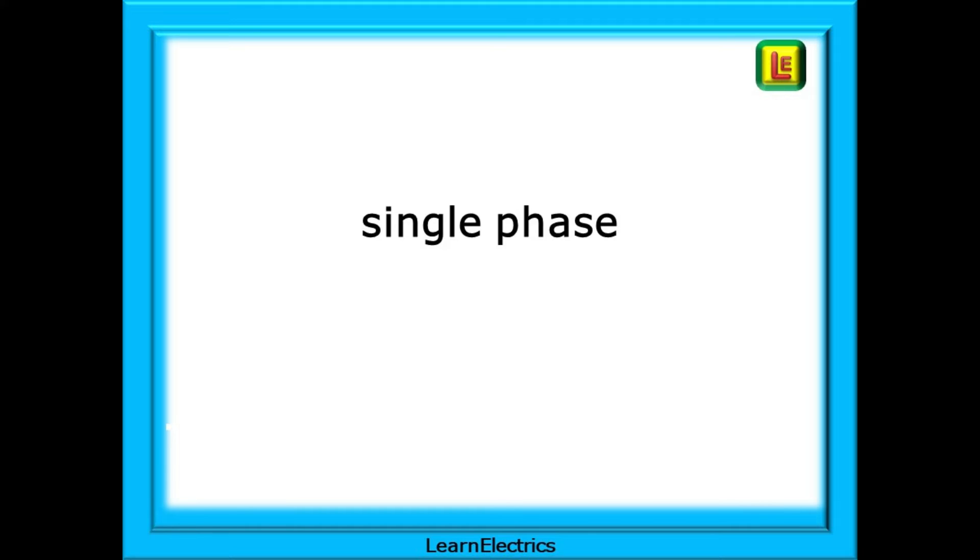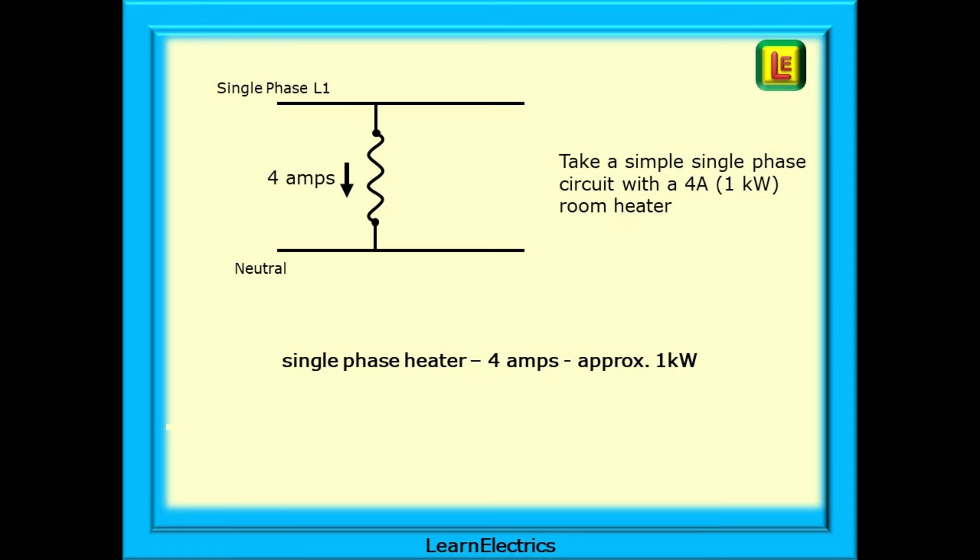If we start with a single-phase, we can look at what happens to currents in equipment. Let's take a simple single-phase circuit with a 4-amp, or 1-kilowatt, room heater. We know that 4-amps will flow along the single-phase line conductor, probably through the plug. The energised current will pass through the heater element, making them hot. Having given up its energy in making the room warm, the current then flows back along the neutral conductor to the plug and back to the consumer unit.